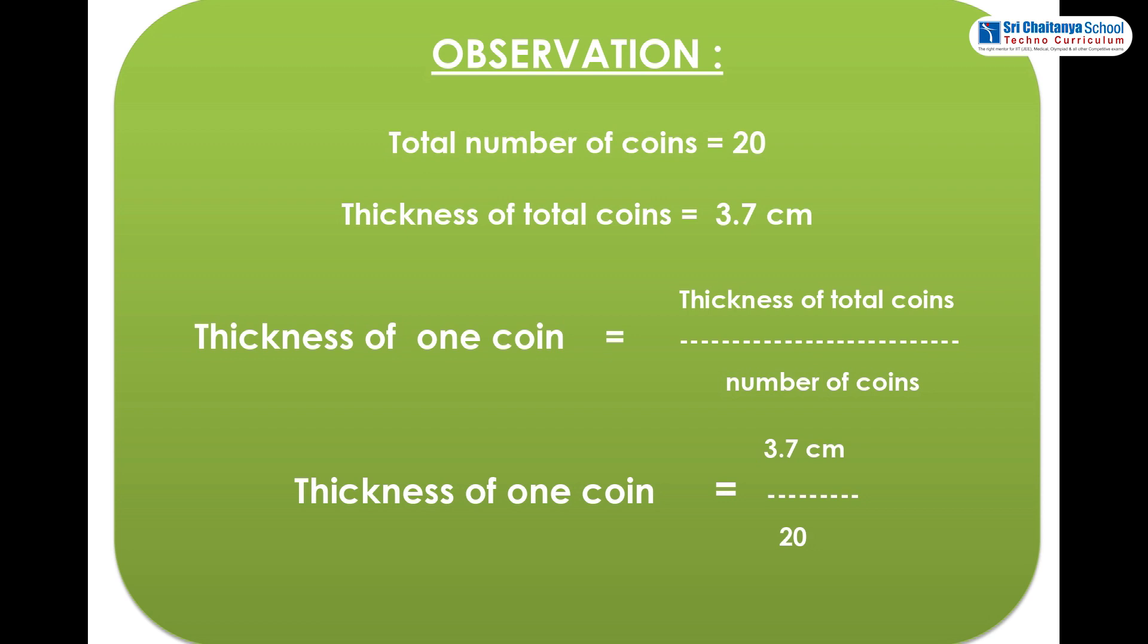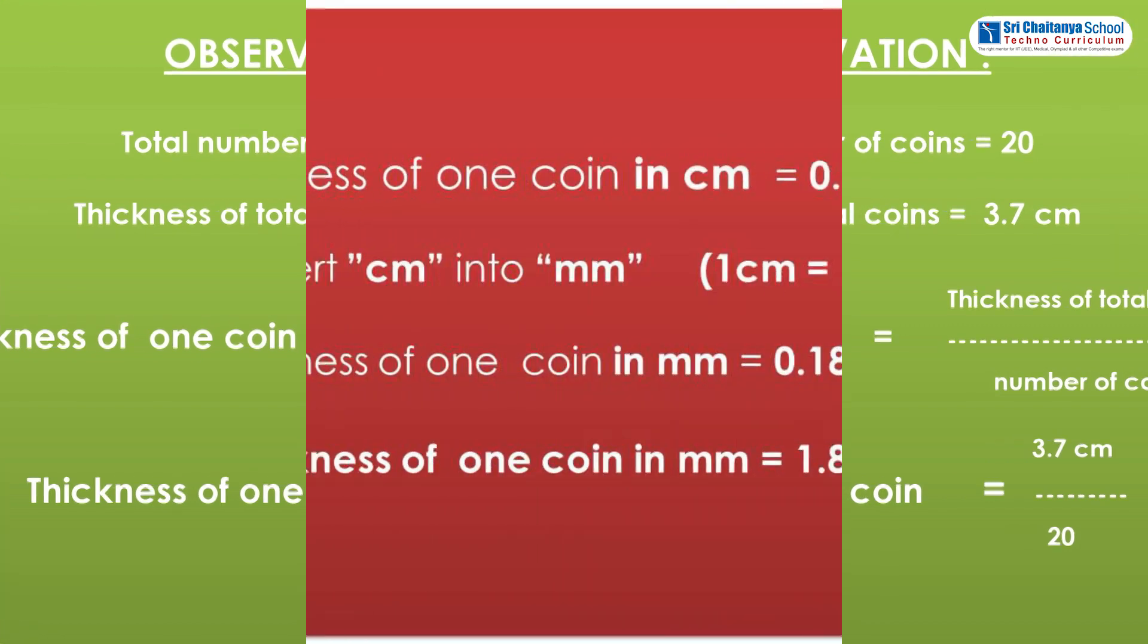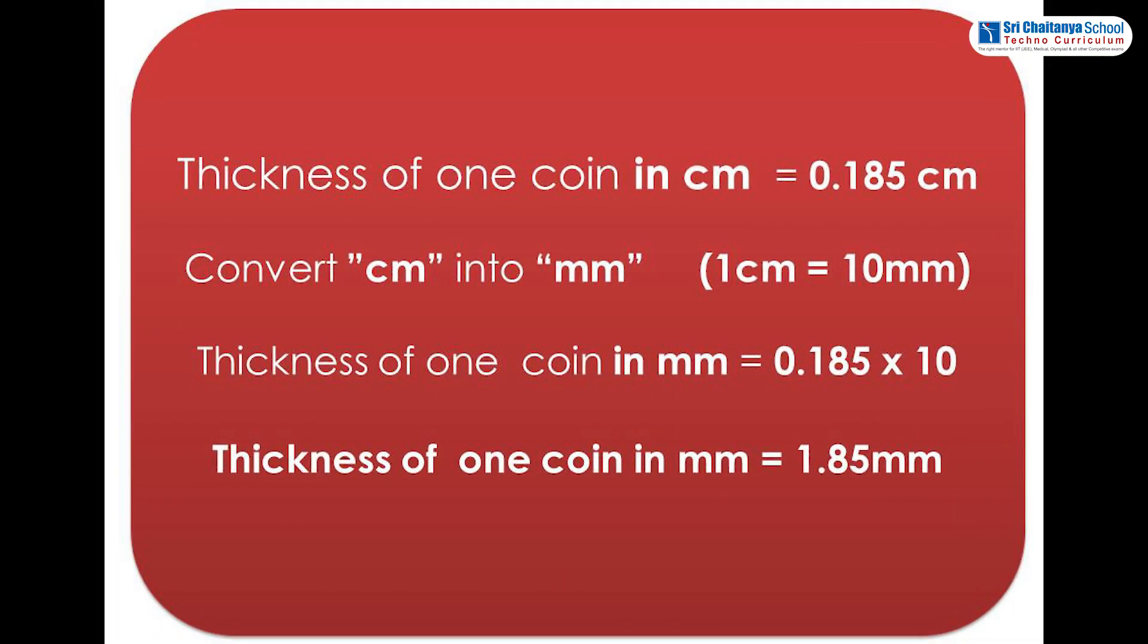Observation: Total number of coins equals 20. Thickness of total coins equals 3.7 centimeters. Thickness of one coin equals thickness of total coins divided by number of coins. Thickness of one coin equals 3.7 centimeters divided by 20, which equals 0.185 centimeters.